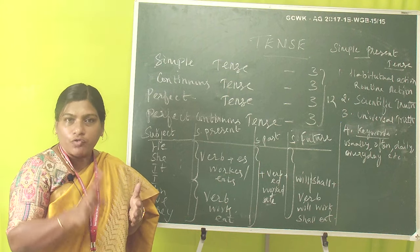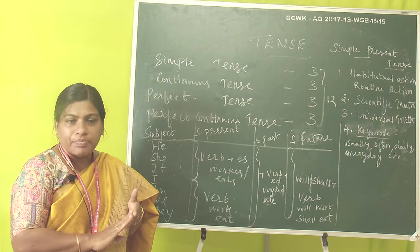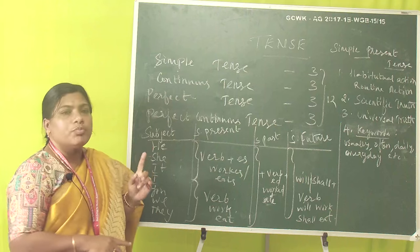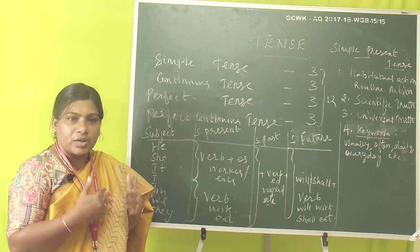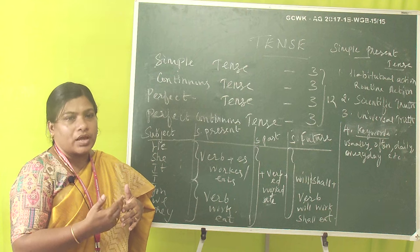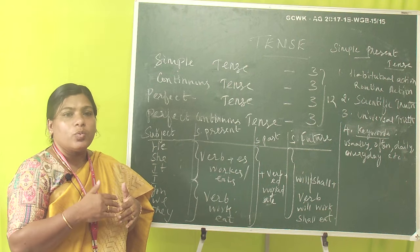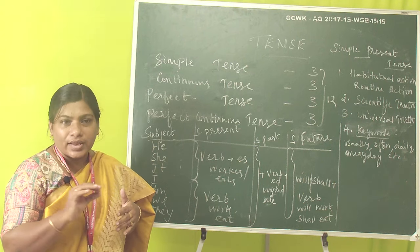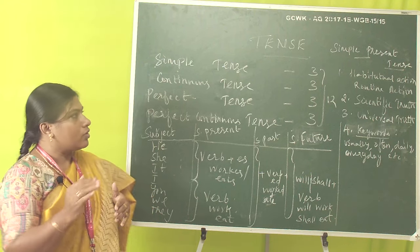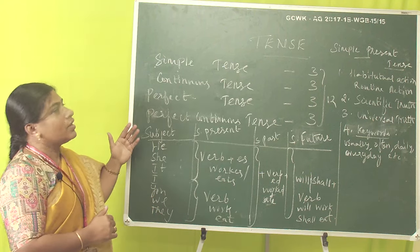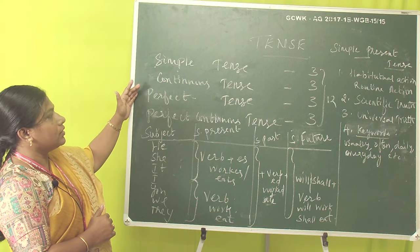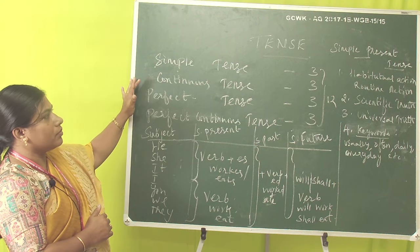In English communication, we have four skills: LSRW. When we know about tense, we come to know about speaking and writing without making any mistake in grammar. So let me go into the tense.